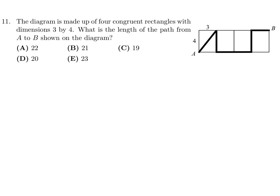The diagram is made up of four congruent rectangles with dimensions three by four. What is the length of the path from A to B? With simple Pythagorean theorem you can figure out that it's a three-four-five rectangle. Three squared plus four squared equals x squared.